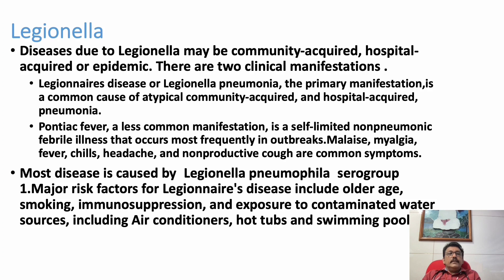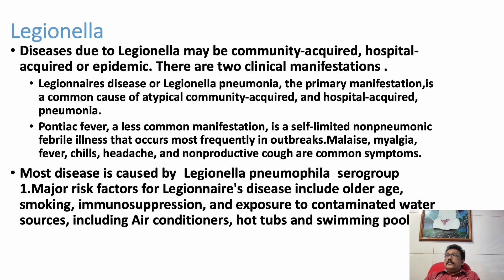Another important atypical organism is Legionella. Legionella disease can be community-acquired, hospital-acquired, or epidemic. It is mainly caused by Legionella pneumophila serogroup 1. Major risk factors include old age, smoking, immunosuppression, and exposure to contaminated water sources. It spreads mainly through air conditioning vents throughout buildings, and also through hot tubs and swimming pools.